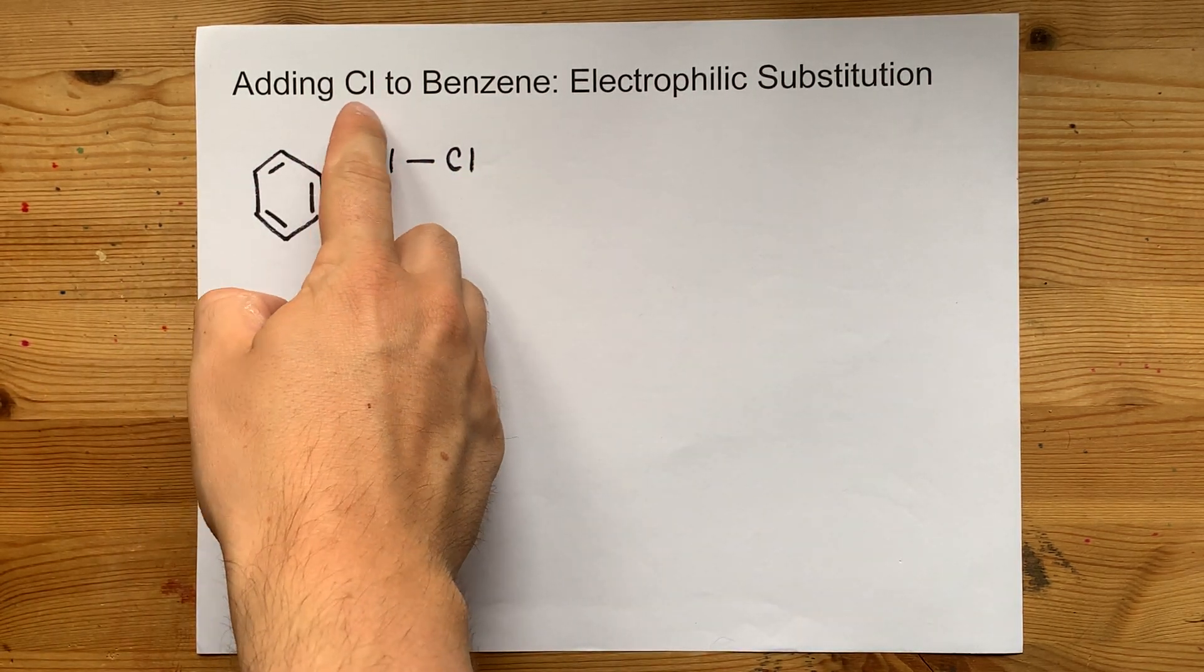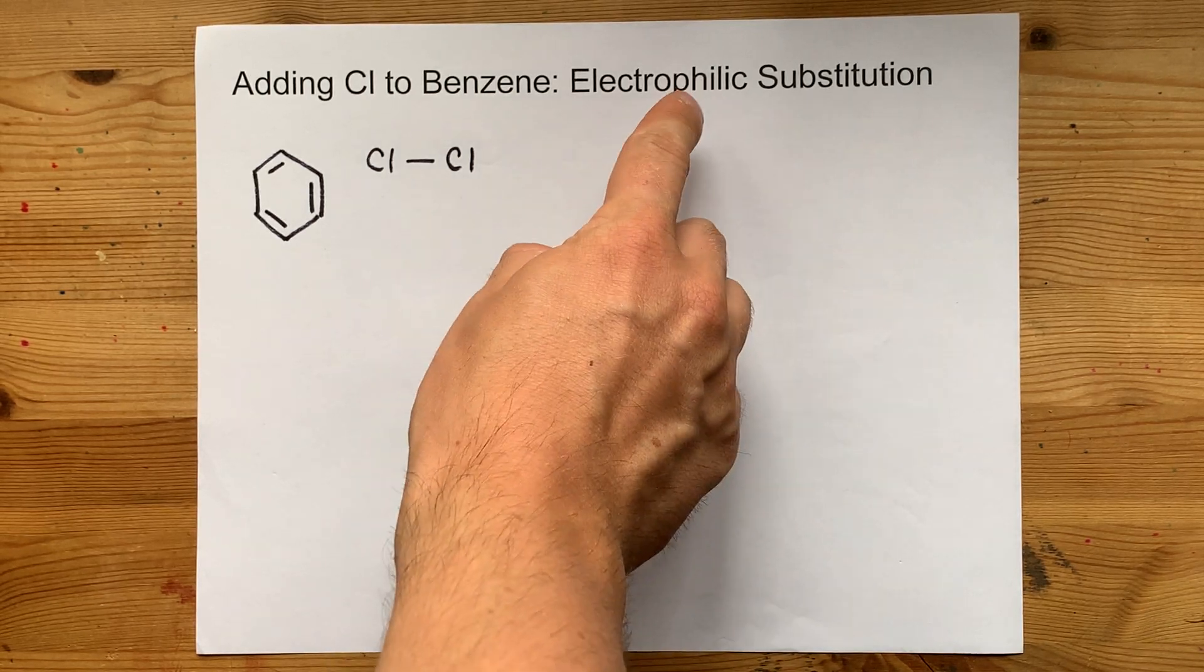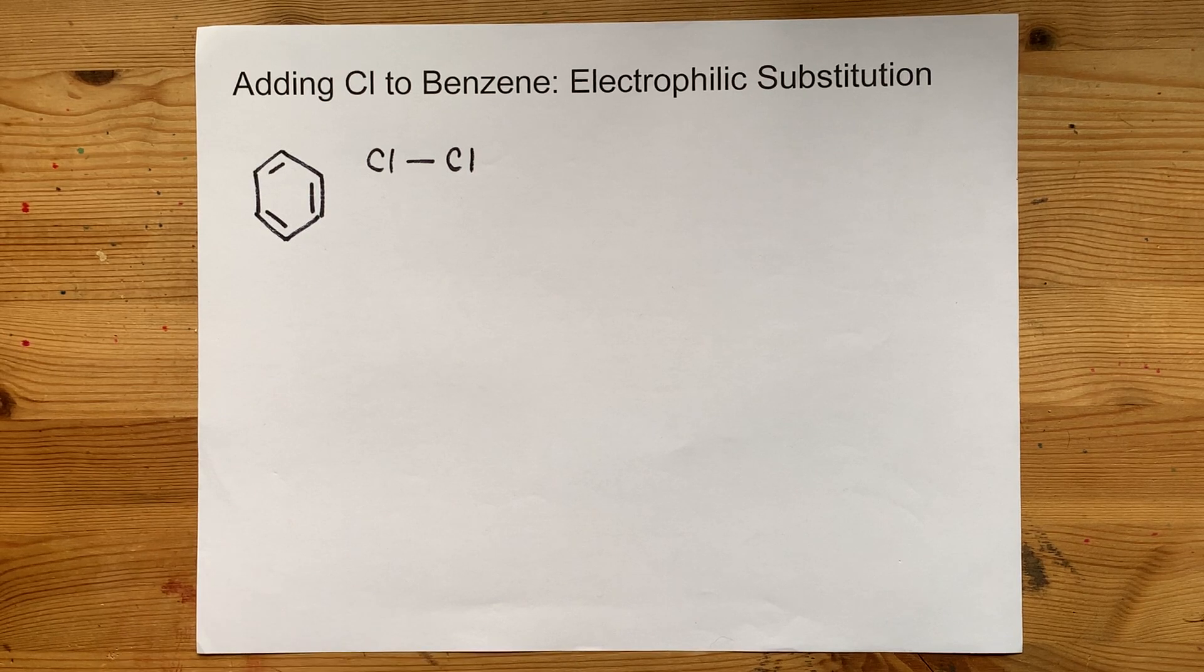How do you add chlorine onto a benzene ring? The answer is a process called electrophilic substitution, and I'll show you exactly how it works right now.